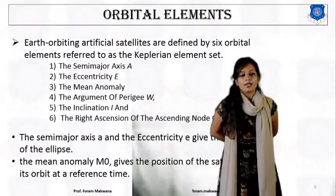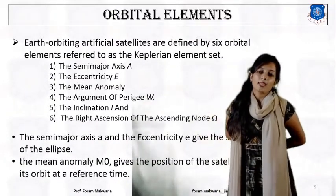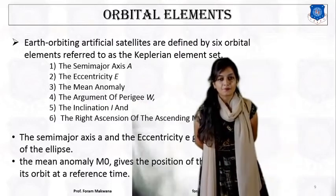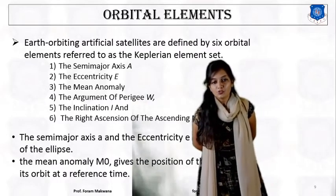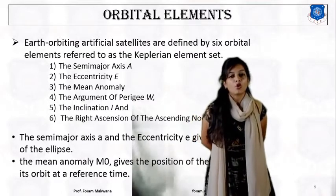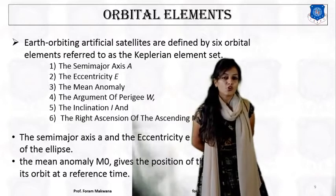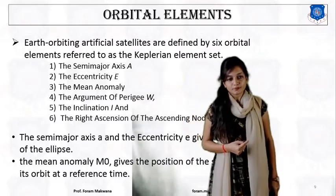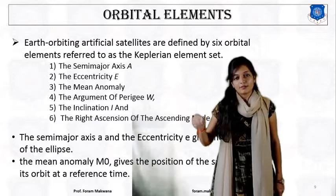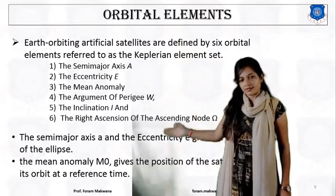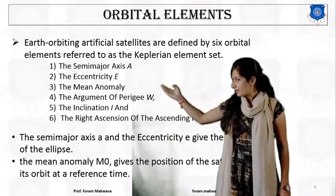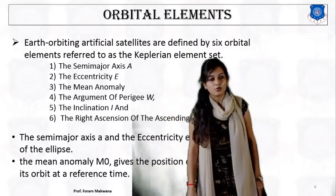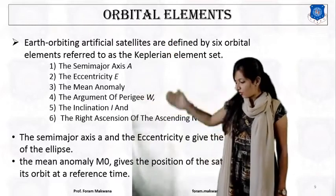Now, what are the orbital elements? There are a total of 6 orbital elements, used to define the position and orientation of an orbit. These six elements are: semi-major axis, eccentricity, mean anomaly, argument of perigee, inclination, and the right ascension of ascending node. We now know the definition of all 6 orbital elements.